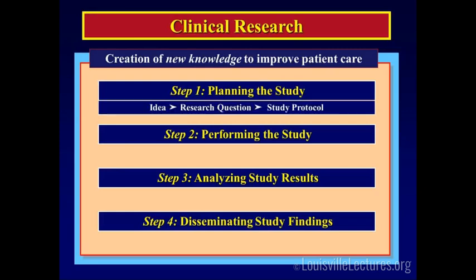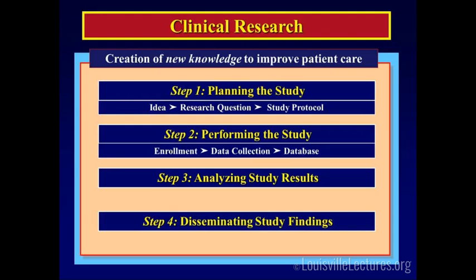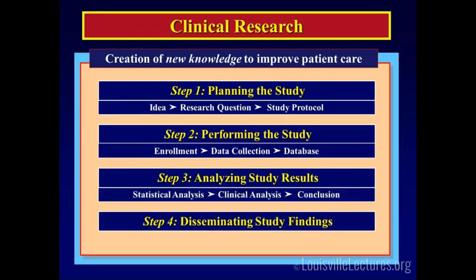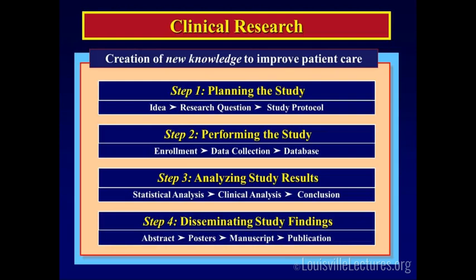In planning the study, you go from idea to research question, ending with a study protocol. In performing the study, you do patient enrollment and data collection, ending with your study database. In analyzing the data, you look at statistical and clinical analysis, ending with your conclusions. When you disseminate, you can write abstracts and posters, but you're going to end with a peer-reviewed publication. This is the five-minute summary of clinical research.